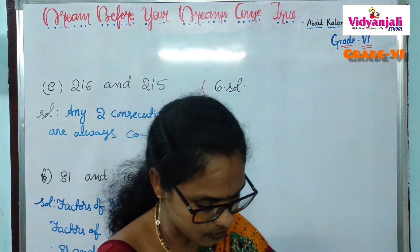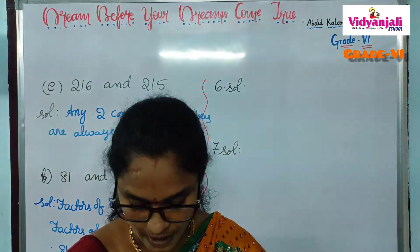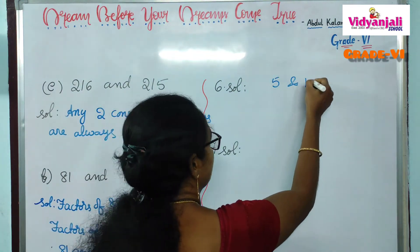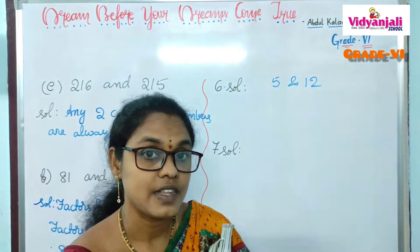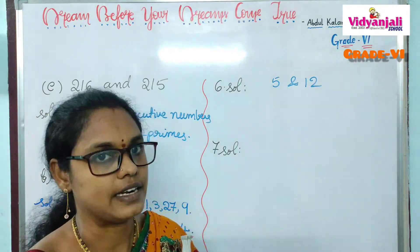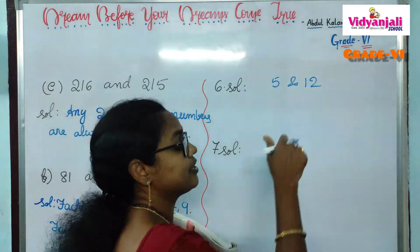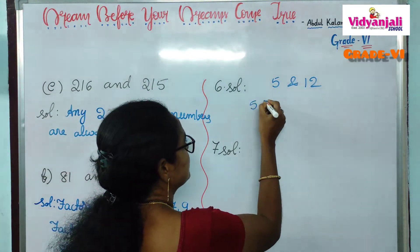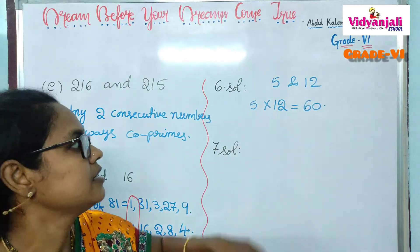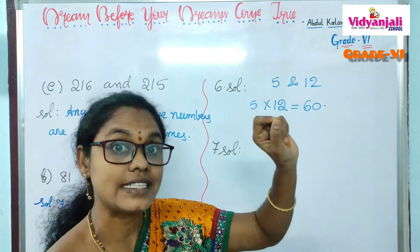Sixth question: a number is divisible by both 5 and 12. By what other number will that number always be divisible? We apply the co-prime rule: 5 and 12 are co-primes, so if a number is divisible by both 5 and 12, it is also divisible by their product — 5 times 12 is 60.